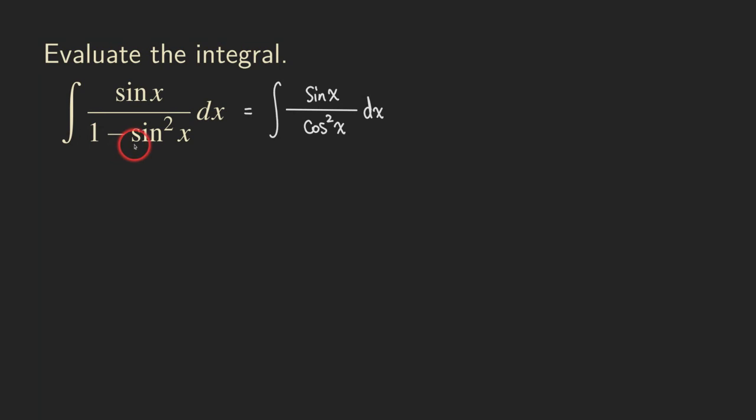If you cannot recall the 1 minus sine square x, I will just show you right here. Let's just recall that sine square x plus cosine square x is equal to 1.